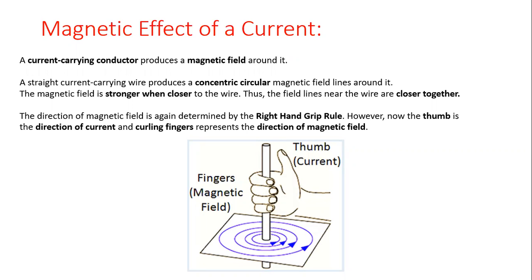So to summarize: when a current passes through a conductor, a magnetic field is produced around the conductor in the form of concentric circles. When these concentric circles are closer to each other, the magnetic field is stronger in that region. When the circles are farther apart, the magnetic field is weaker.